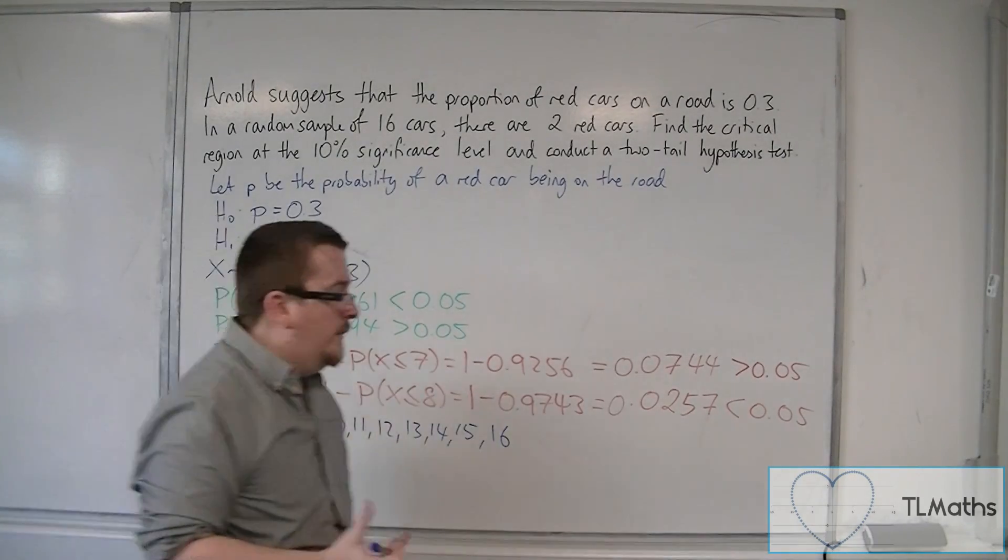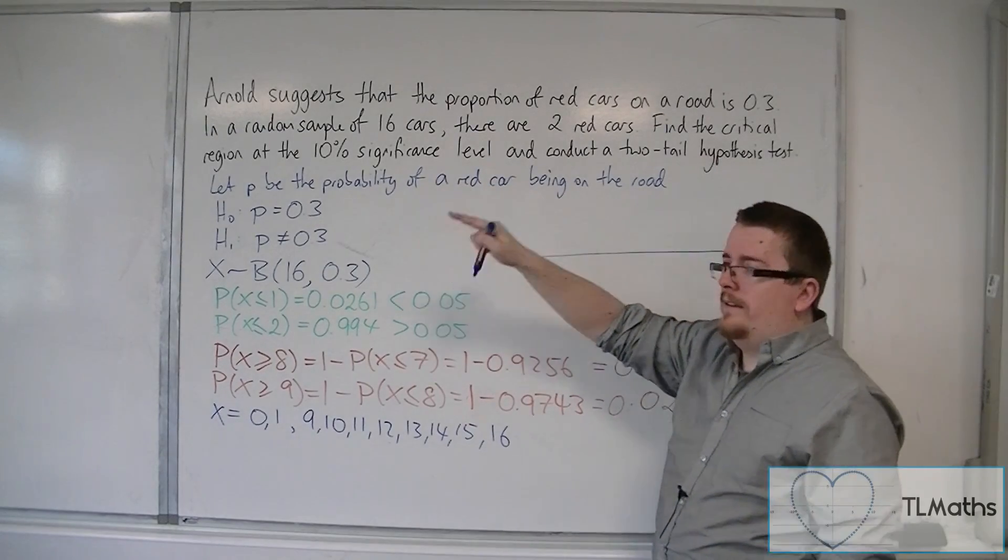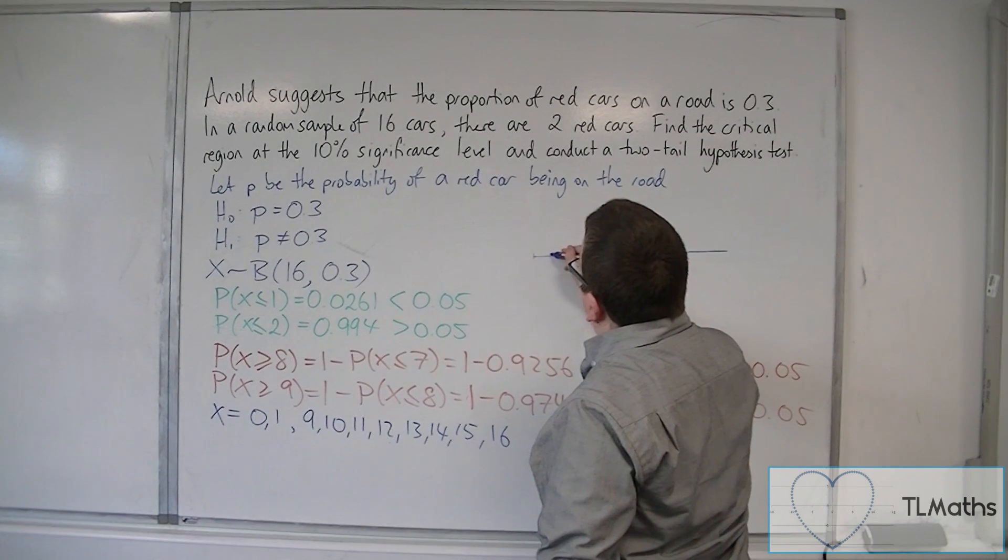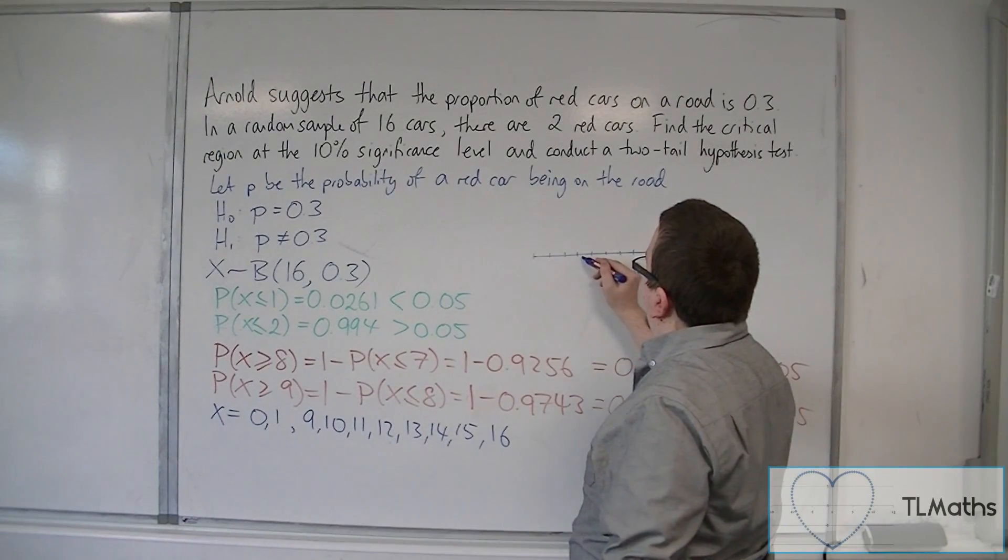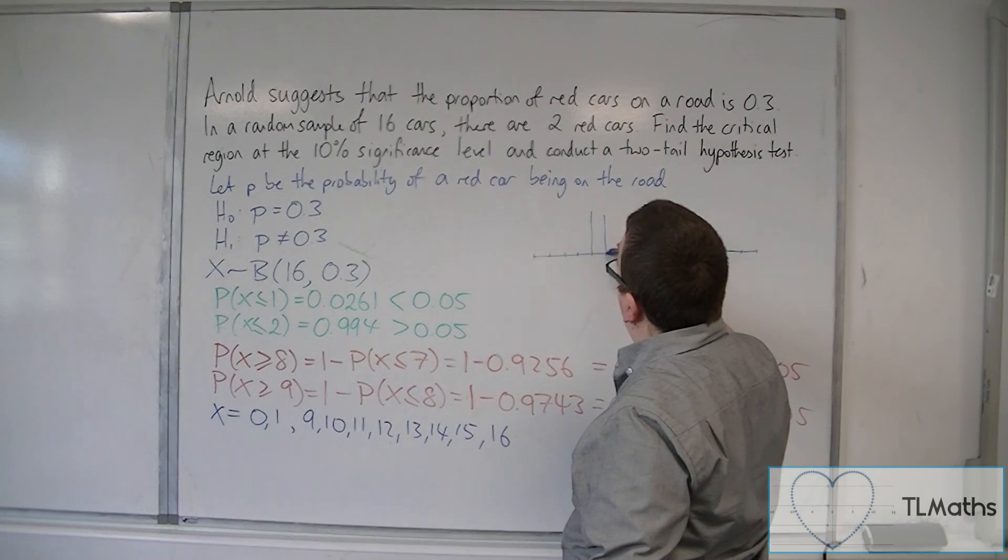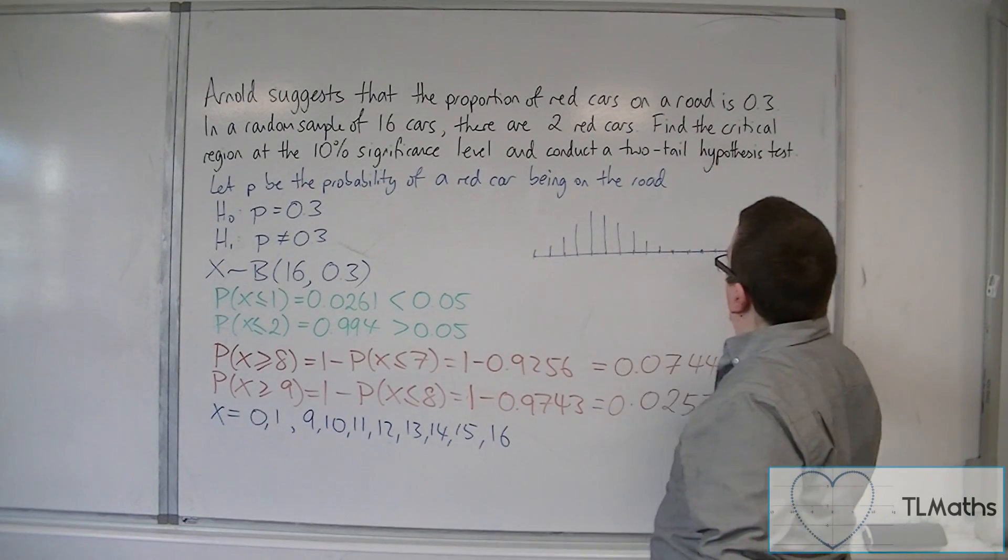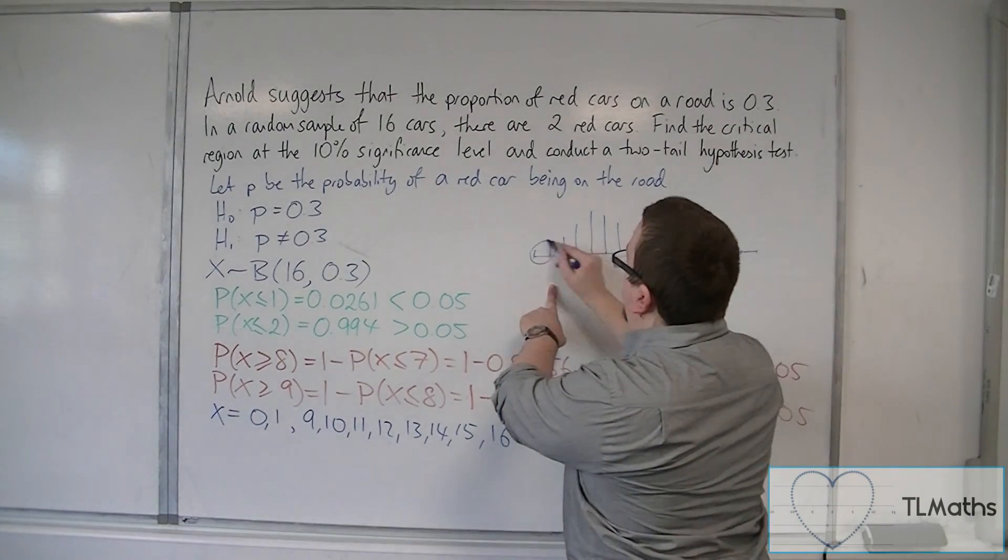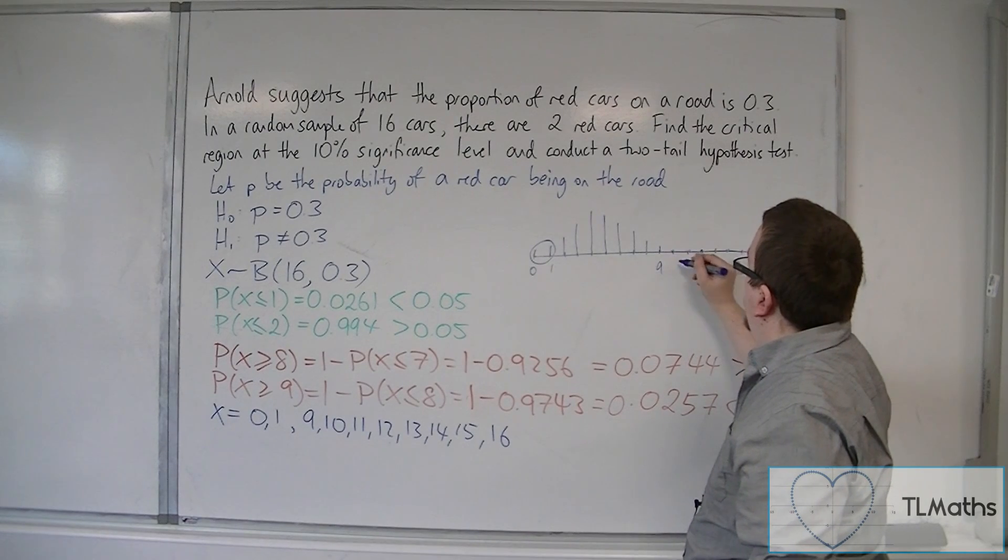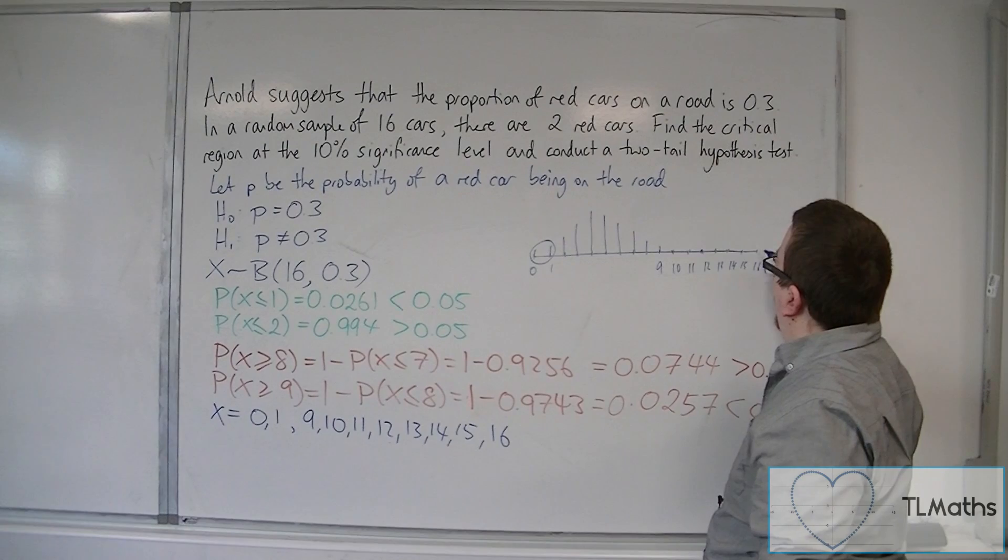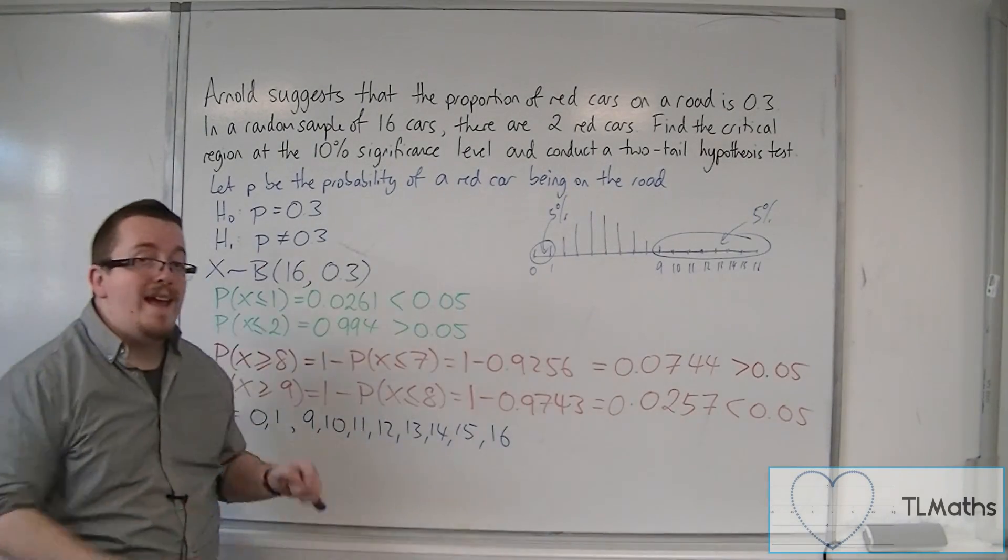So, what we have here is a distribution. Because it's at 0.3, 0.3 times 16 is 4.8. So the highest bars are going to be around this kind of range, and they're going to be quite small going through. We've got 0 and 1, that takes up 5%. We've got 2, 3, 4, 5, 6, 7, 8, 9. So, 9, 10, 11, 12, 14, 15 and 16, that is another 5%. So, that is how it is shared out with the distribution.